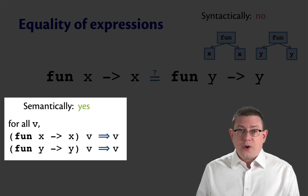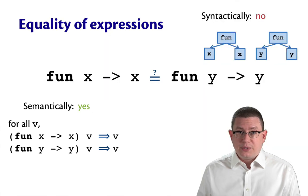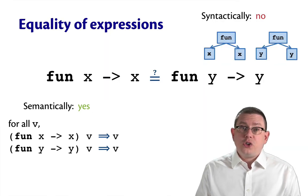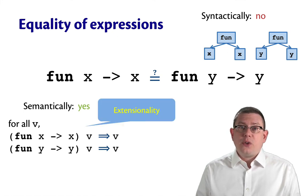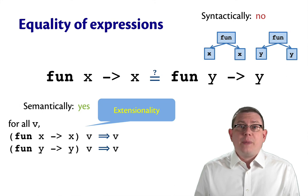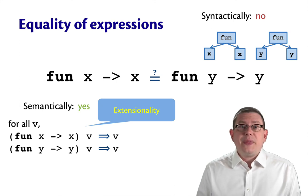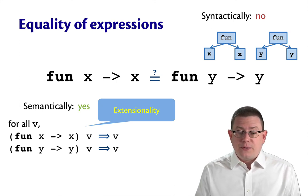So for all values, the two functions produce the same output. That is a notion of equality on functions that is called extensionality. Extensionality is well known from mathematical logic. You might or might not have encountered it before. But that is the notion of equality we will use on functions.